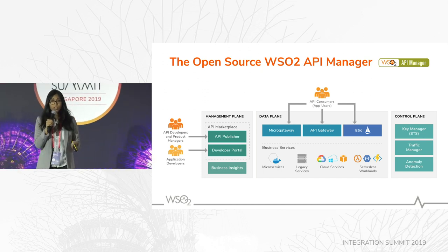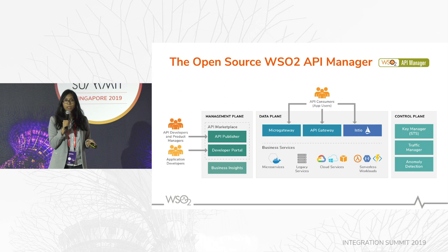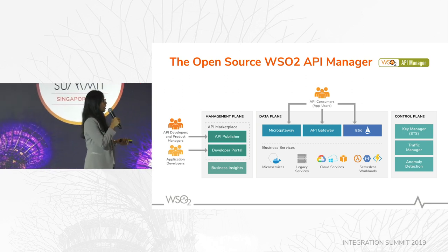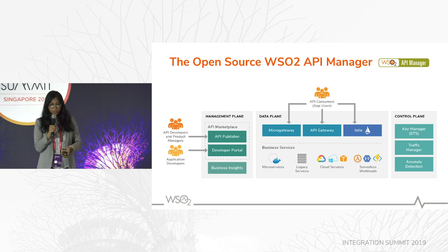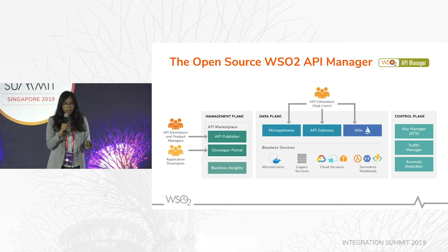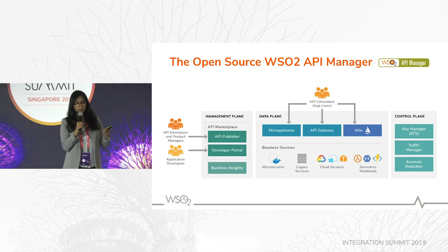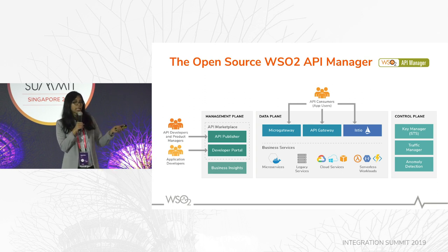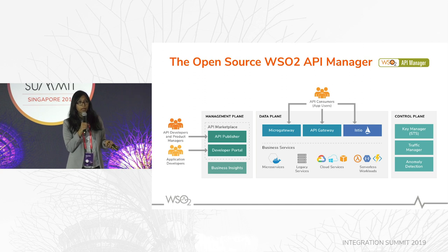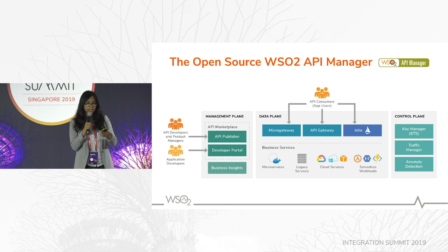The control plane consists of a key manager responsible for managing and validating security tokens. The traffic manager can manage traffic, and there's also an anomaly detection component that can detect anomalies and trigger alerts or notify interested stakeholders. The gateway component resides in the data plane — when API consumers consume the applications, API calls hit the API gateway, which during runtime talks to the components of the control plane and finally dispatches the request to the backend microservices. The micro gateway and the Istio API adapter are also offerings that come with the API Manager — we'll discuss those in upcoming slides.